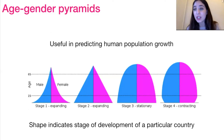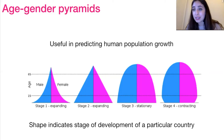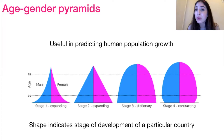Age-gender pyramids are really interesting and useful because they allow us to predict human population growth and show the different stages of the demographic transition model, from stage one to stage four. They show a split between male and female of how many individuals are present in a population at different ages, with age on the y-axis. In stage one, an expanding population has a high proportion of individuals at younger ages but not many at higher ages, indicating high birth rates and high death rates — typical of an LADC.